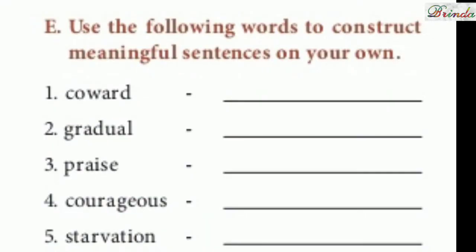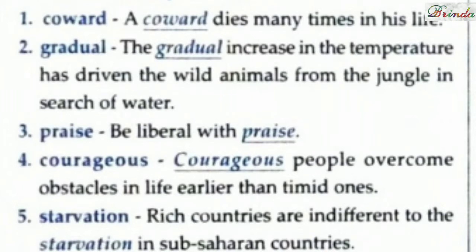Moving on to Section E — use the following words to construct meaningful sentences on your own. First: 'coward' — a coward dies many times in his life. Second: 'gradual' — the gradual increase in temperature has driven wild animals from the jungle in search of water. Third: 'praise' — be liberal with praise. Fourth: 'courageous' — courageous people overcome obstacles in life earlier than timid ones. Fifth: 'starvation' — rich countries are indifferent to the starvation in less developed countries.